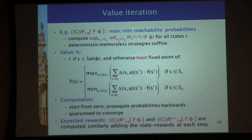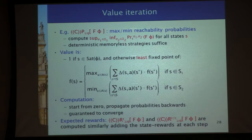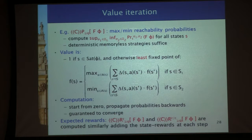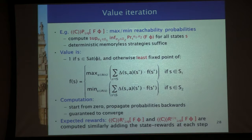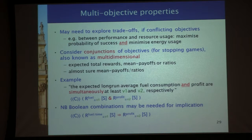This is what value iteration looks like — basically minimised or maximised depending on whether the state is controlled by the coalition or by everyone else. Minimising corresponds to taking the worst case. And it's very similar with rewards.